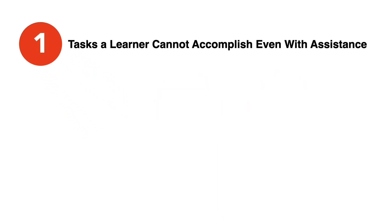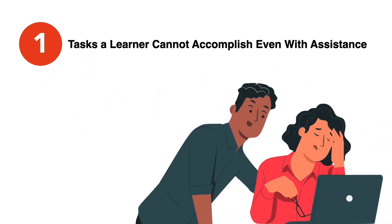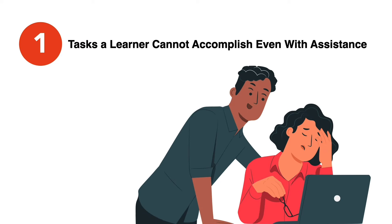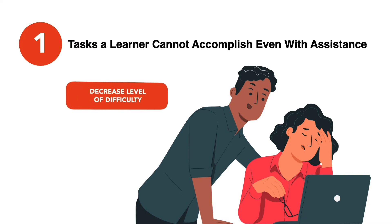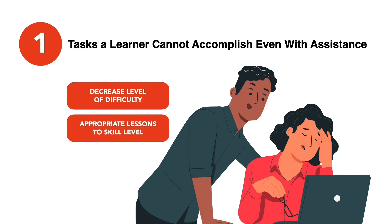Zone 1 – Tasks a learner cannot accomplish with assistance. Tasks that are outside of a learner's ZPD are those that they are unable to complete even with the help of an expert. In this scenario, the expert must decrease the level of difficulty and find tasks that are more appropriate given the learner's skill level.